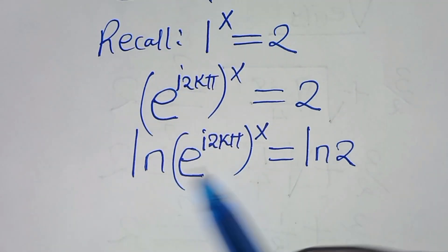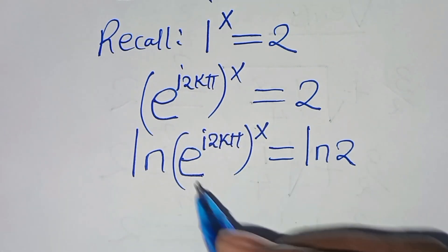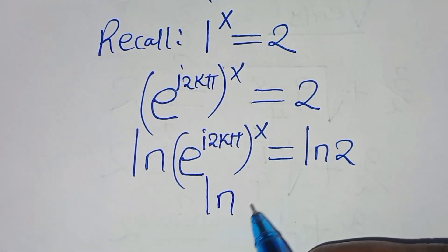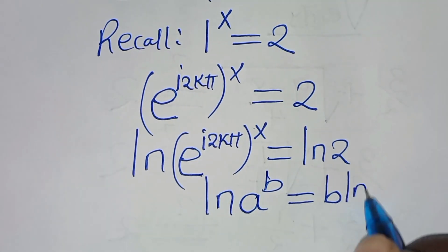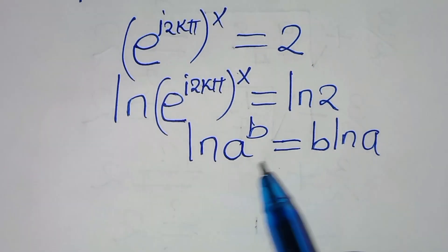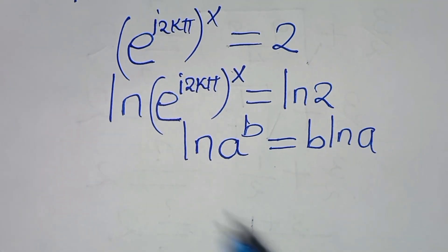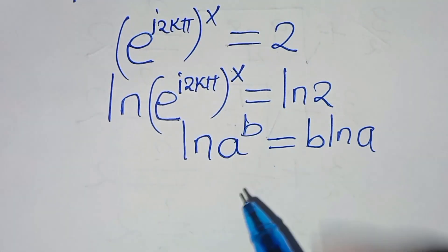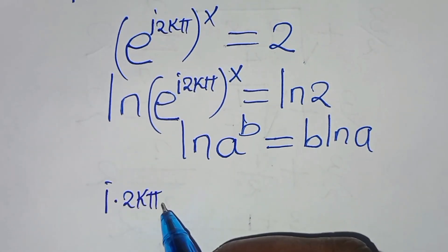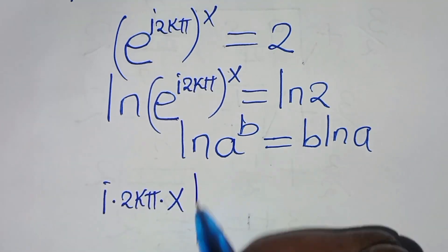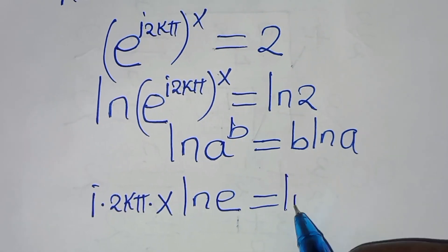We have ln of e to the power of i·2kπ, raised to the power of x, this is equal to the natural log of 2. This expression is in the form of ln of a to the power of b, which we can express as b·ln(a). Applying the power property of logarithm, we get i·2kπ multiplied by x, times ln(e), is equal to ln(2).